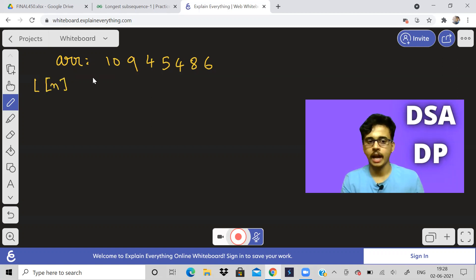So L of N, and initially what values are stored? Initially, we will store all the values as one. Why one? Because suppose I choose only one element from this array. Suppose I choose only six, then also it is considered a valid subsequence. Although there is one element, it is still considered valid. And when there is one element, the length of this will be one. So we should assume that the minimum possible answer is equal to one.